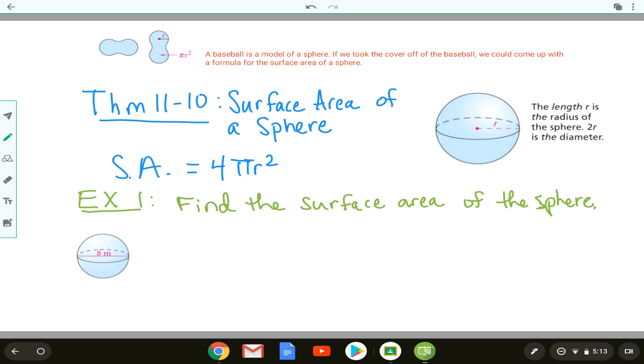A baseball is a good model of a sphere and if we took the cover off the baseball and opened it up we could come up with a formula for a sphere. A baseball has two pieces to the cover and each one is sort of a circle. The radius of each of those is the same and if I found the area of just one of those circular pieces it would be πr² but there are four of them.